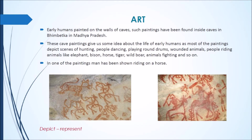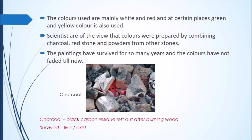In one of the paintings, a man is shown riding on a horse. The early humans used mainly white and red color to color their drawings. They have also used green and yellow color in some places.